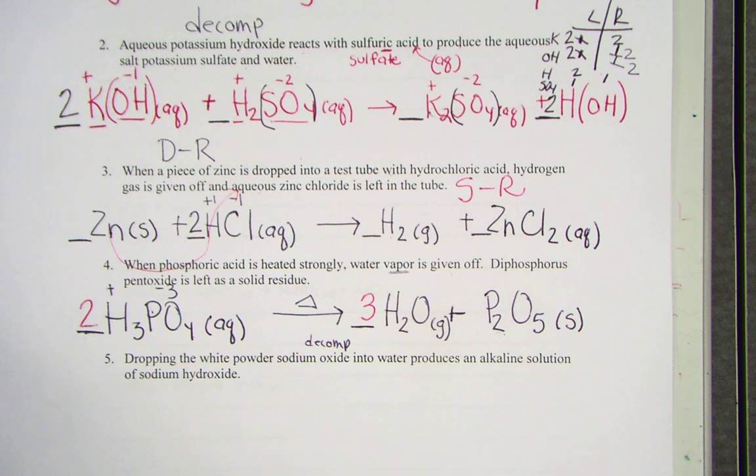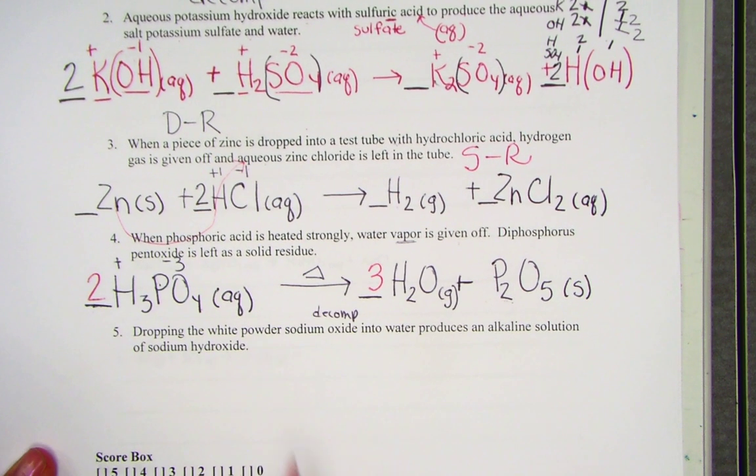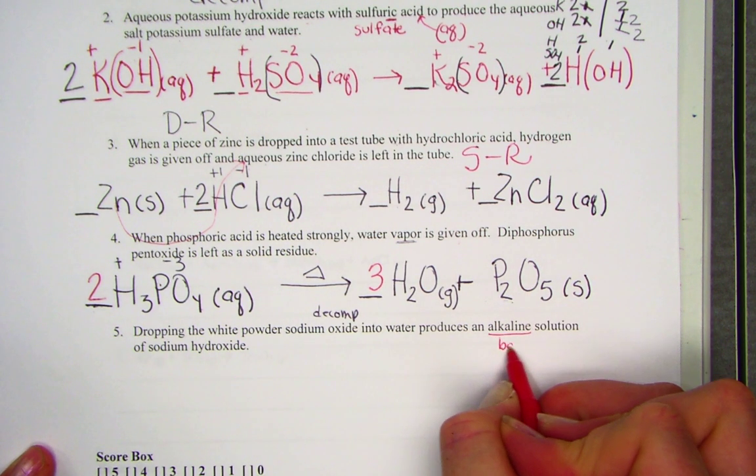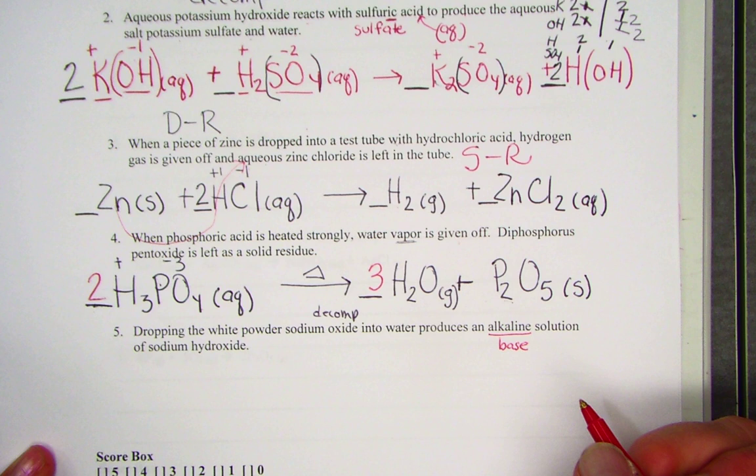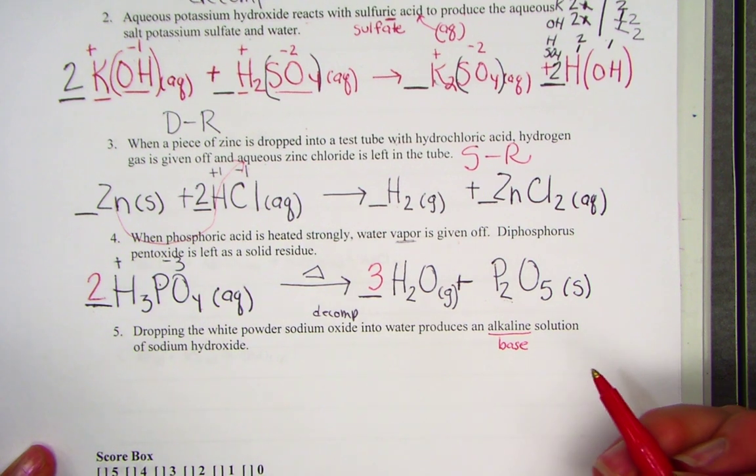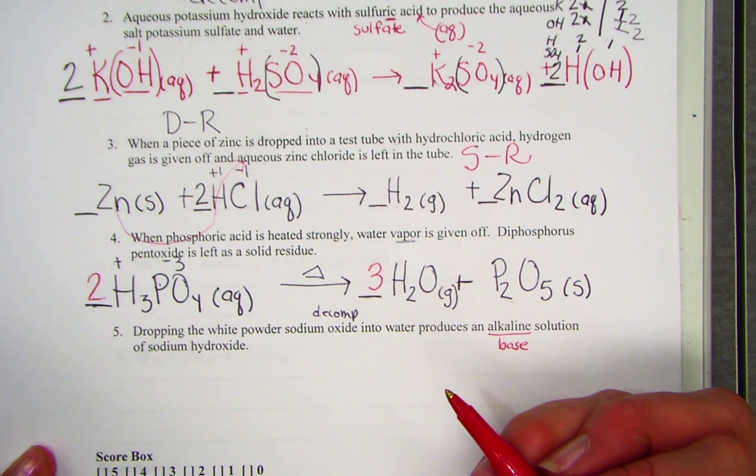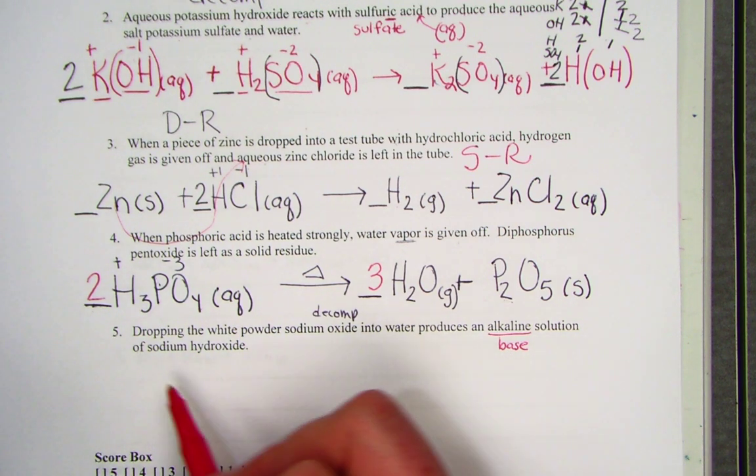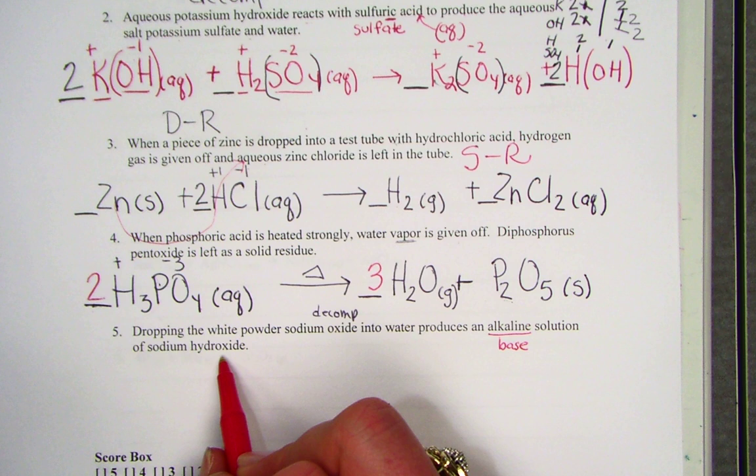A decomposition. We have one more to go, and it's number five. Dropping the white powder, sodium oxide, into water produces an alkaline solution. Alkaline is just another word to say the word base. The opposite of an acid is a base. Maybe you've heard the term alkaline batteries. You put it in your calculator, your iPod, or so forth. The alkaline solution that's being made is sodium hydroxide.